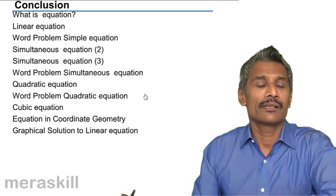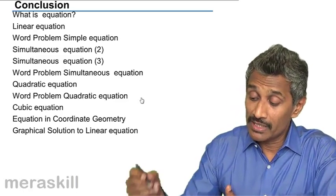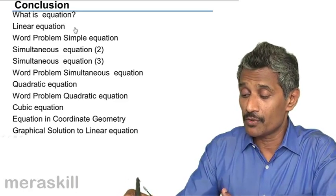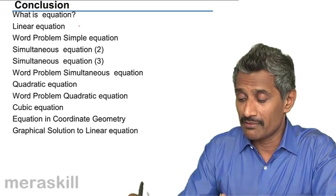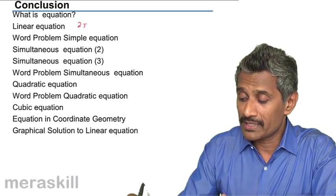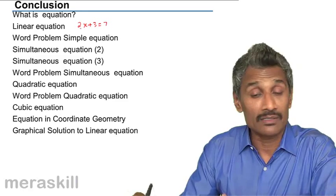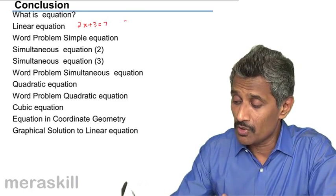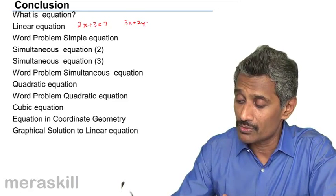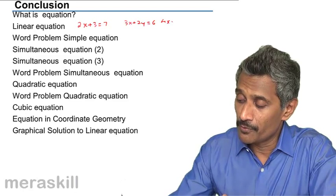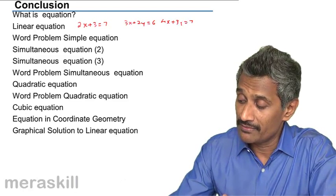We did linear equations as simple equations. It could be either 2x plus 3 is equal to 7, this is a linear equation in one variable, or 3x plus 2y is equal to 6 and 4x plus 3y is equal to 7.